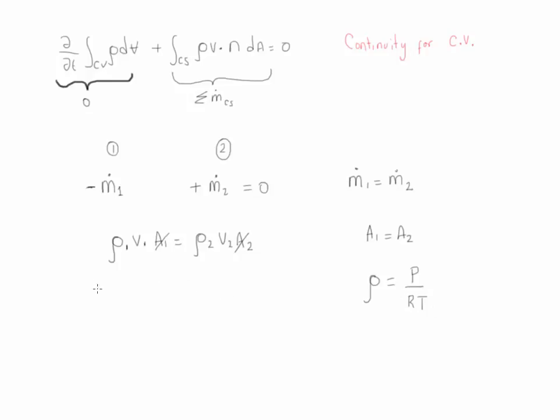So then we replace and we write P₁/(R·T₁)·V₁ equals P₂/(R·T₂)·V₂. Since the value of R is the same, we can cancel it and we know the value of the different points for the pressure. We know that the pressure at point one is equal to 100 psia and notice that this is already absolute.